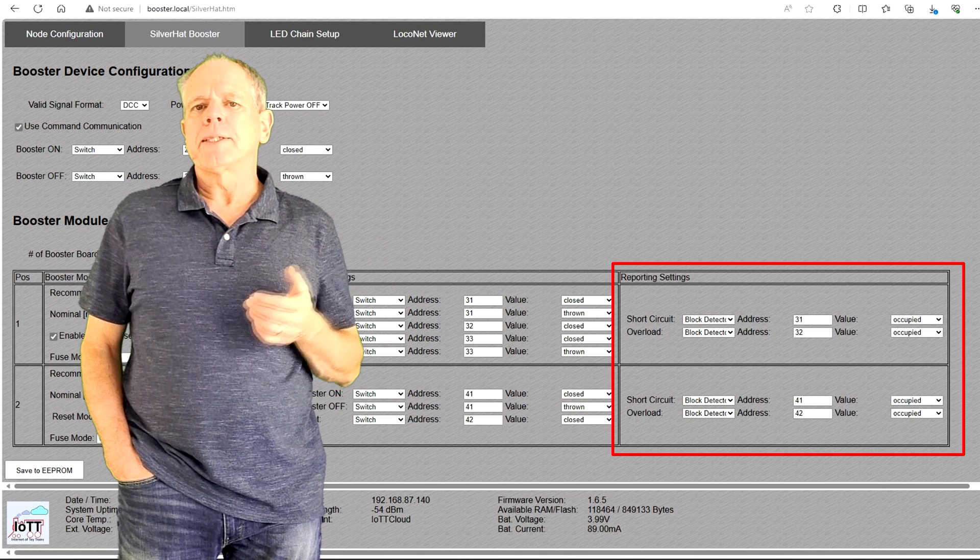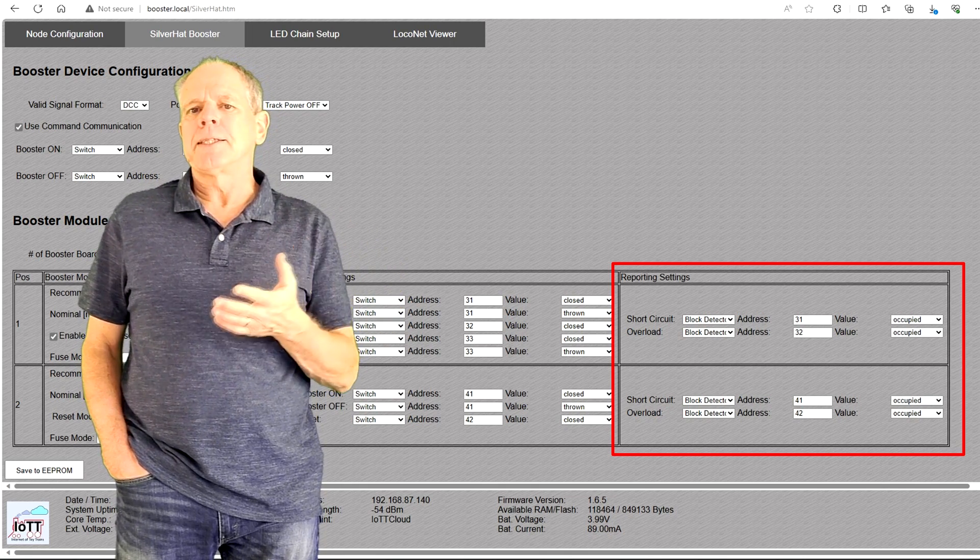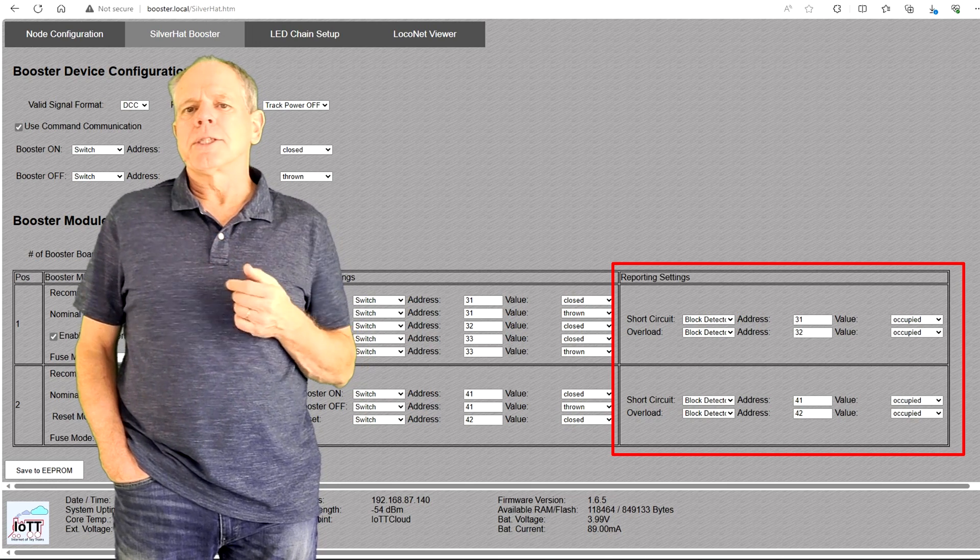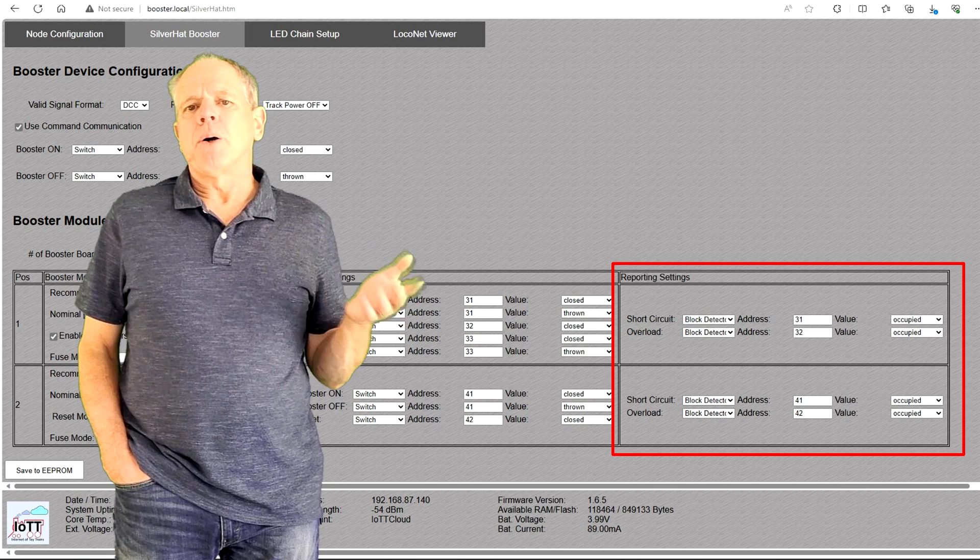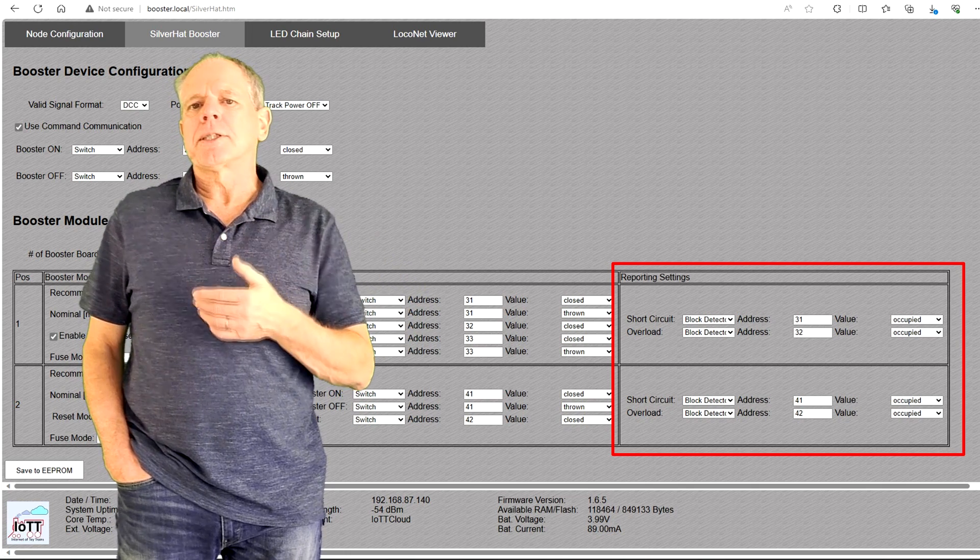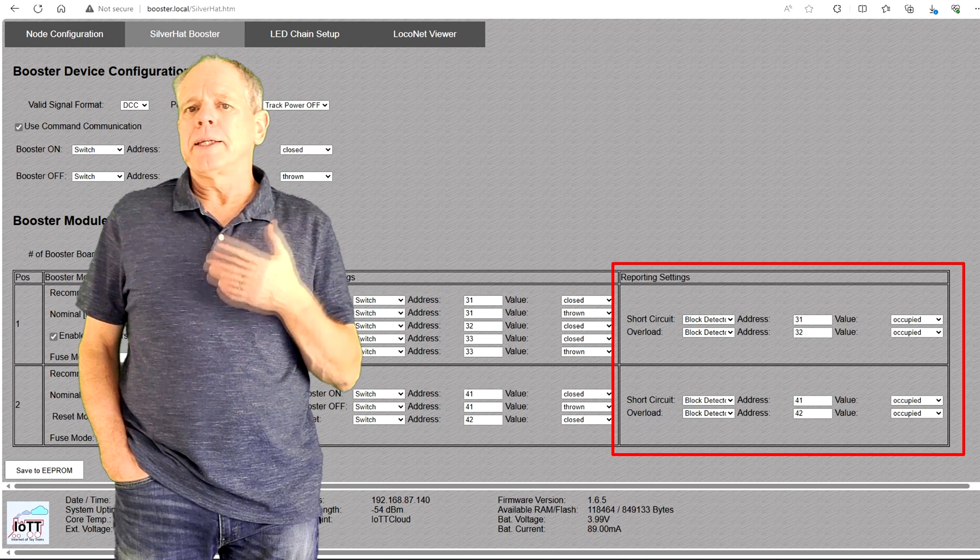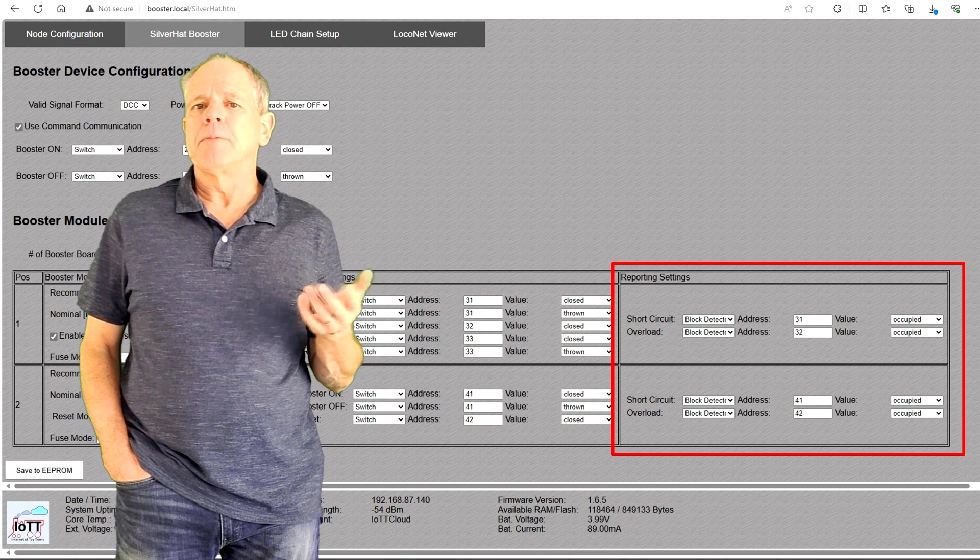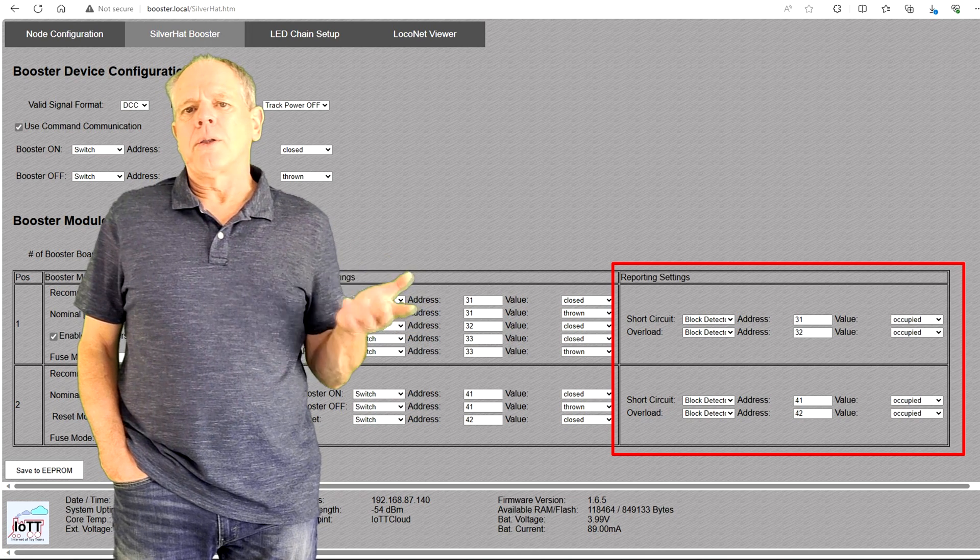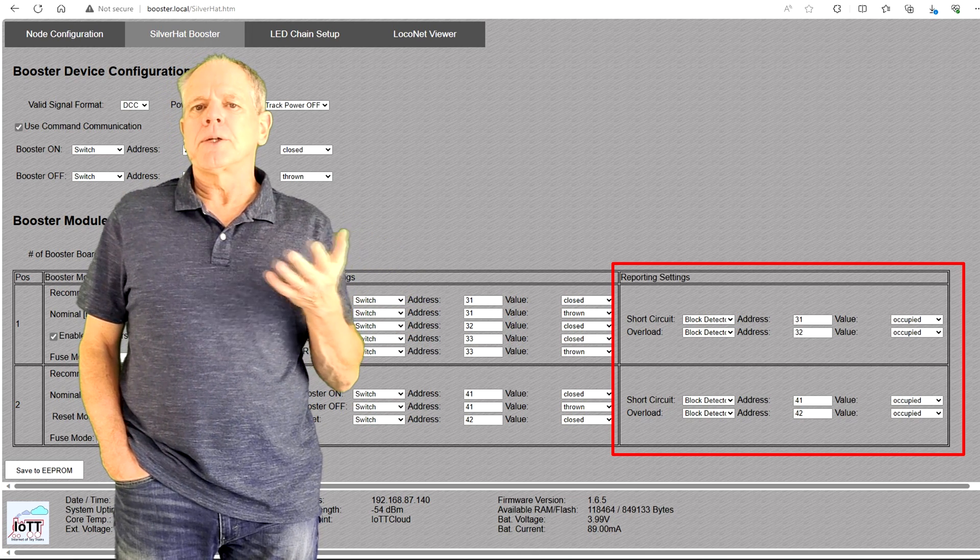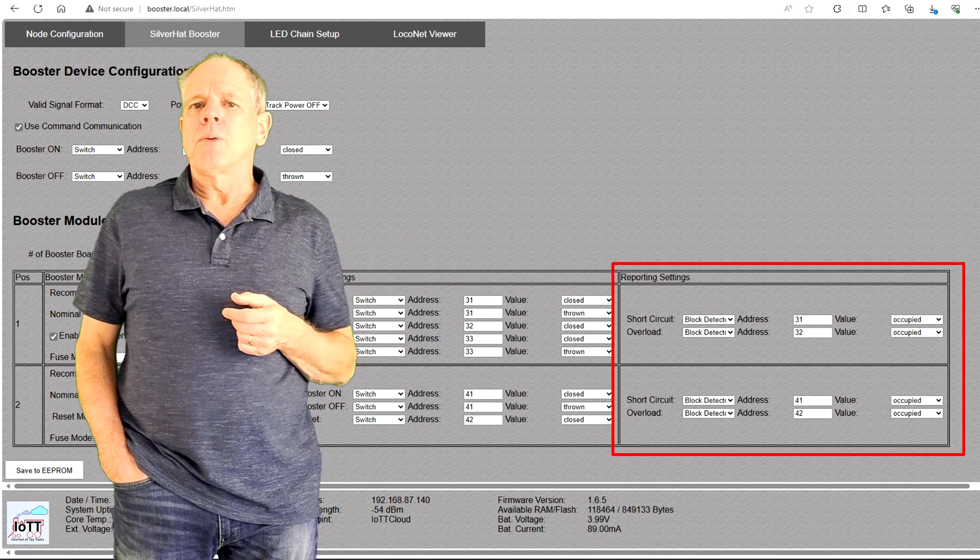Finally, in the reporting settings section, you can specify commands that the booster sends out in case of a short circuit or an overload situation. That makes it possible to display the booster status on a CTC panel or to trigger an alarm in case of a short circuit and similar things. Note that these options are only available if the booster is connected to LocoNet, which provides for bidirectional communication.